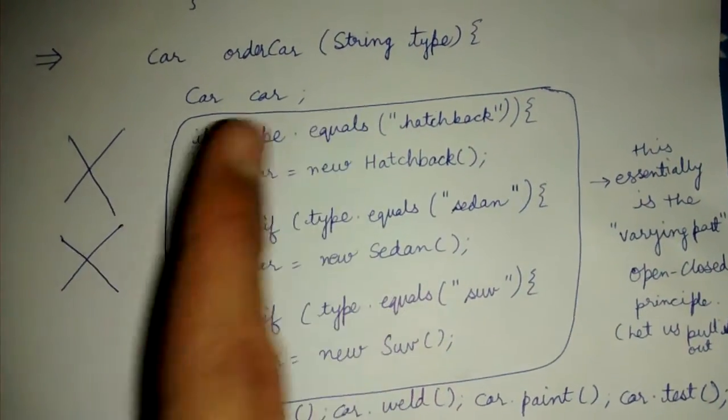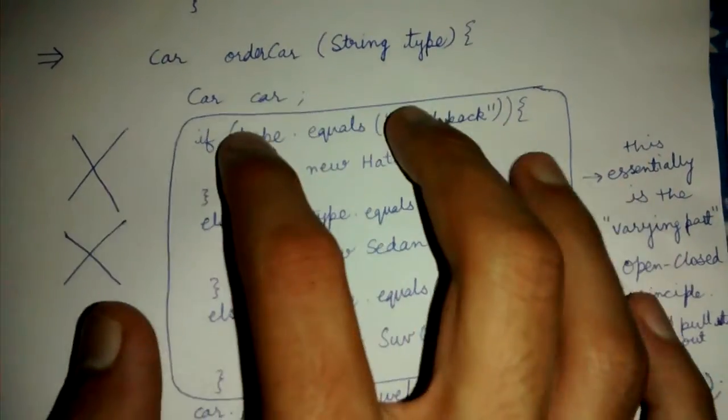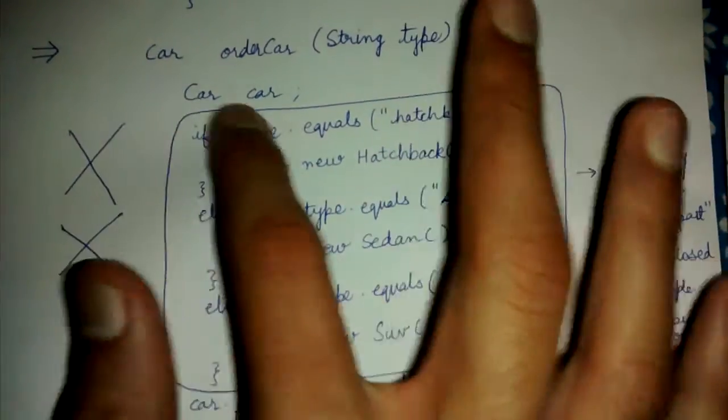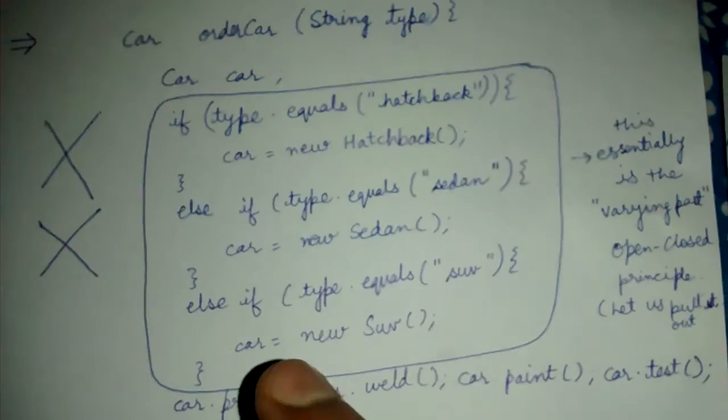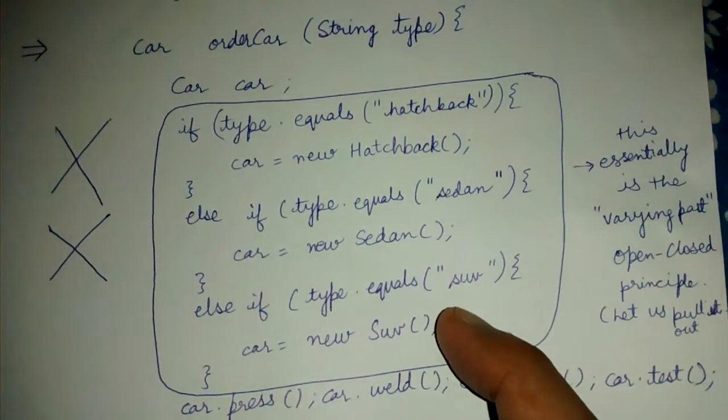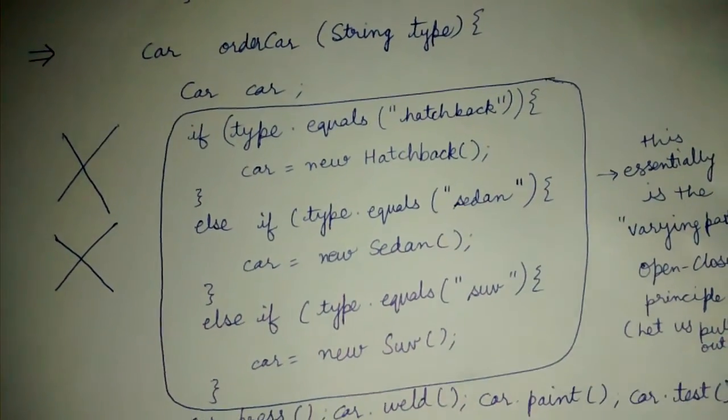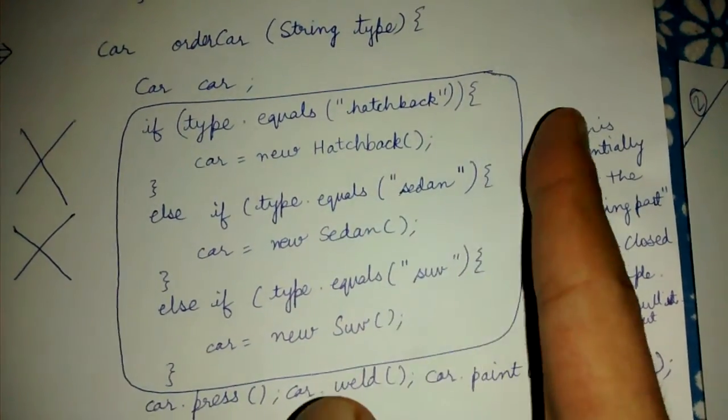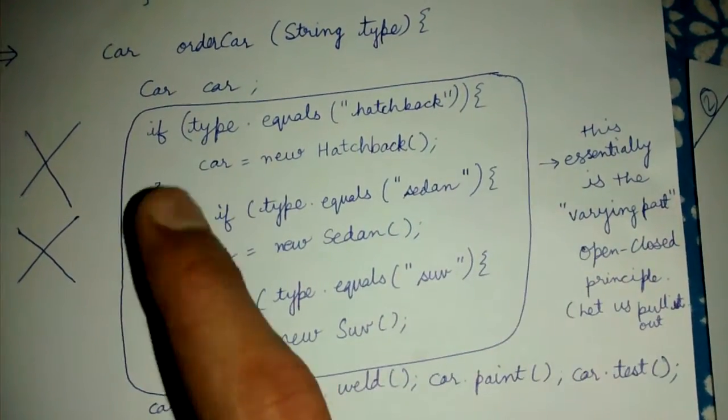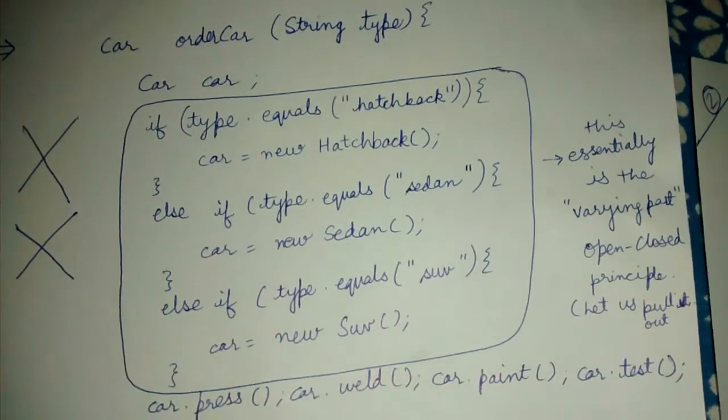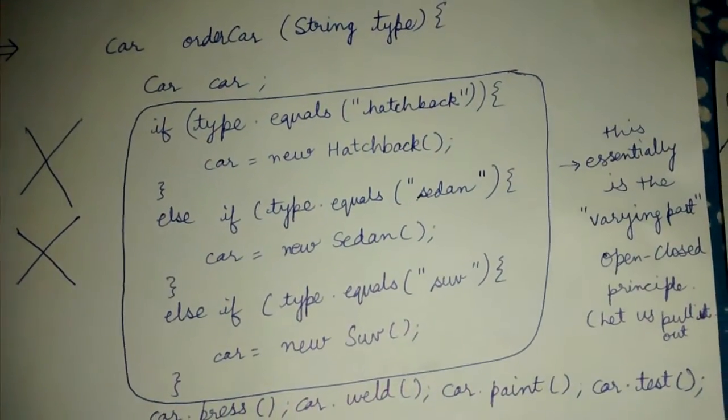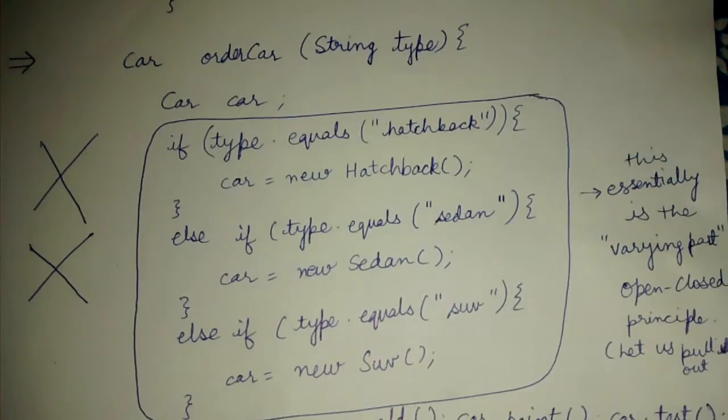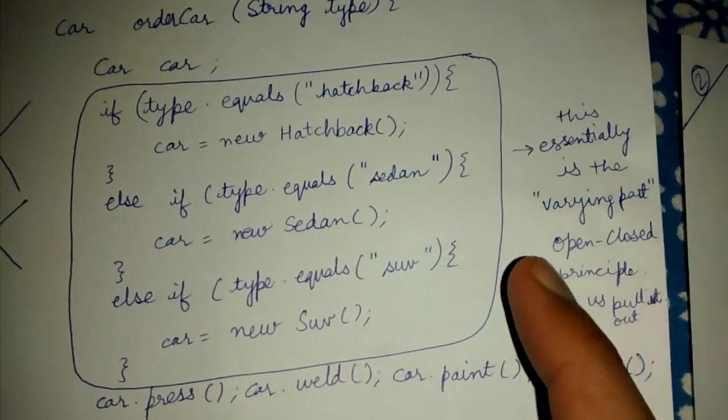In that case, we want to remove this hatchback we have stopped, sedan we have stopped. These two lines of code will be gone and one mpv will be there. Basically, this is the varying part of our code. This varies depending on which all cars we are producing.